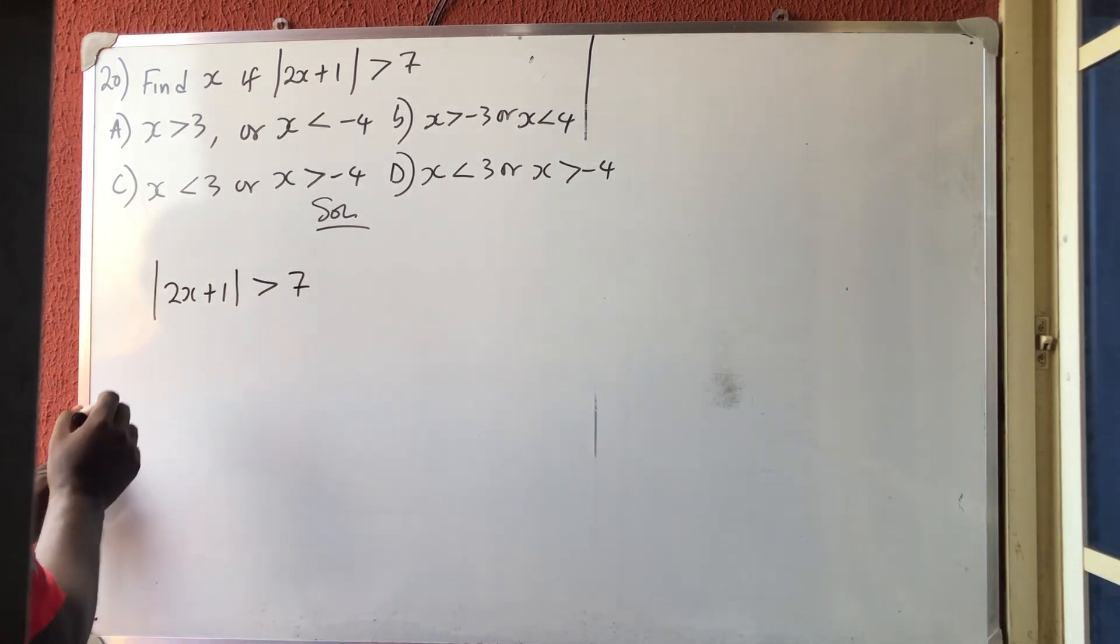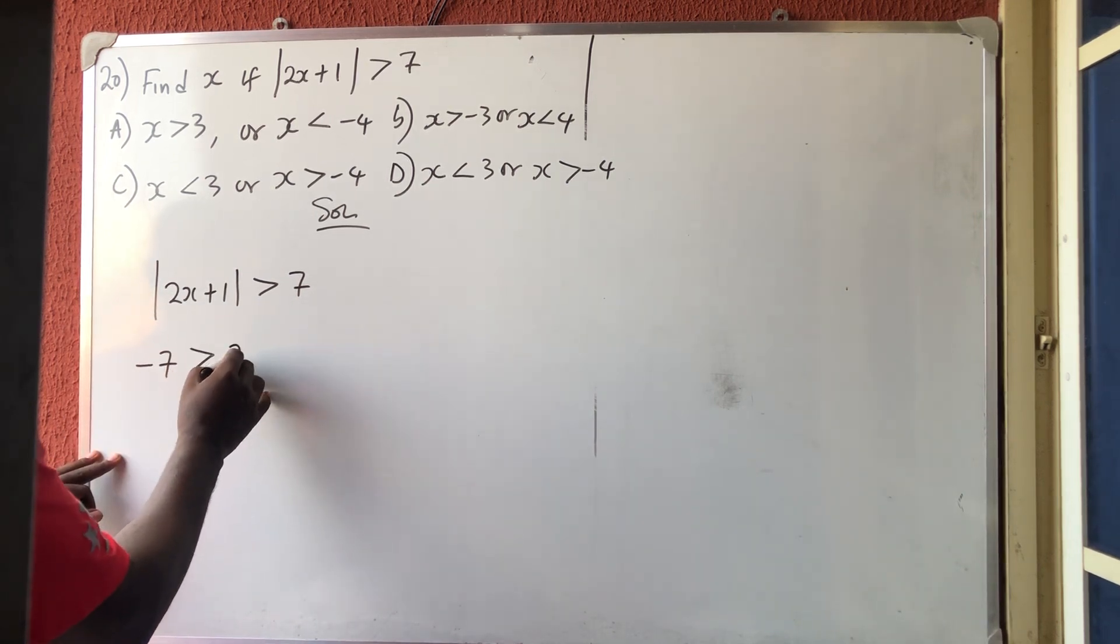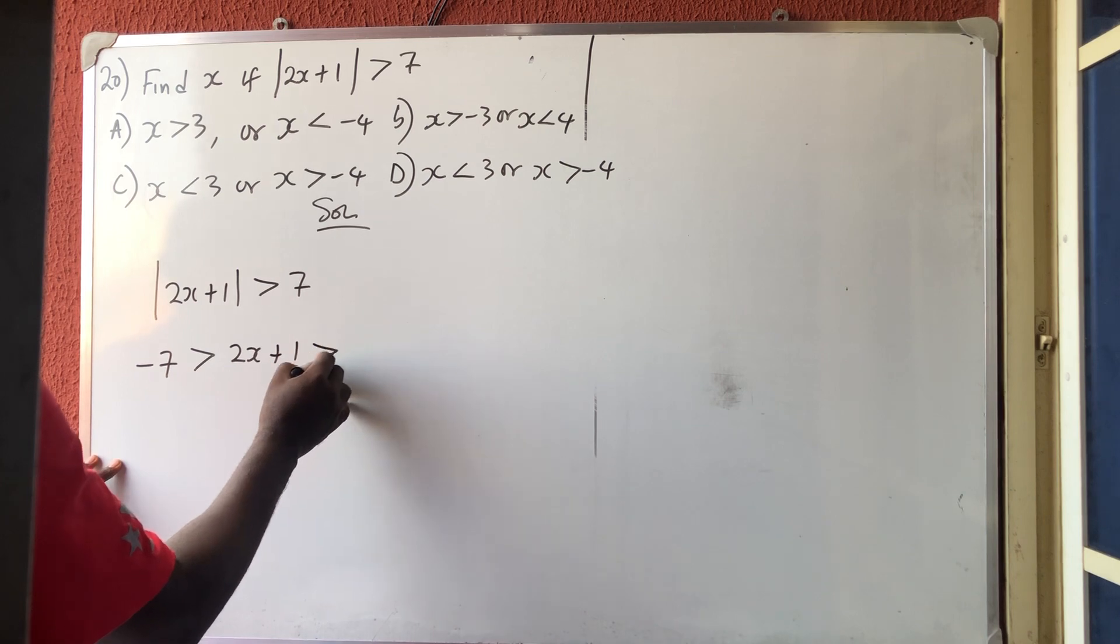So how do you remove absolute value? Take the negative of this to this side. Minus 7, the same sign, is greater than 2x plus 1, which is greater than 7.